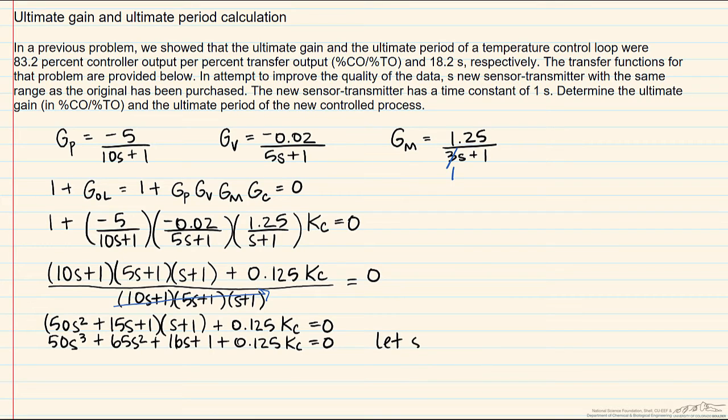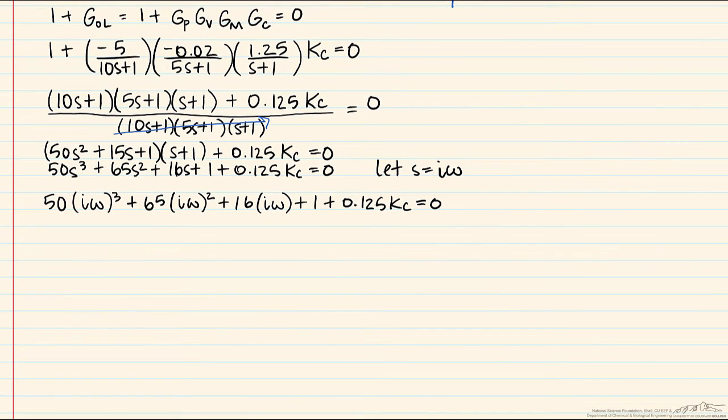In order to use direct substitution we let s equal i times omega, recalling that i squared equals negative one.